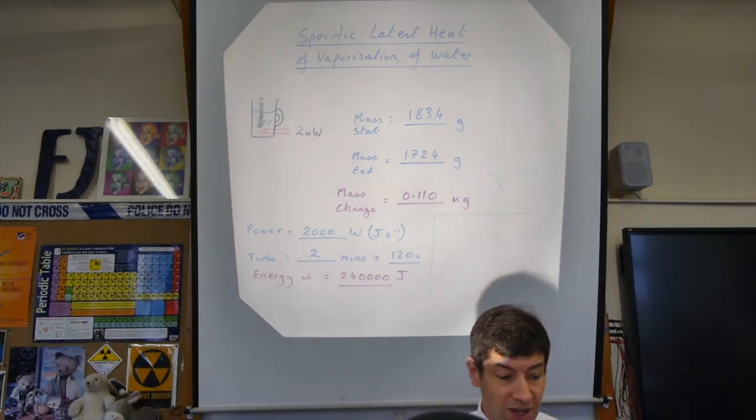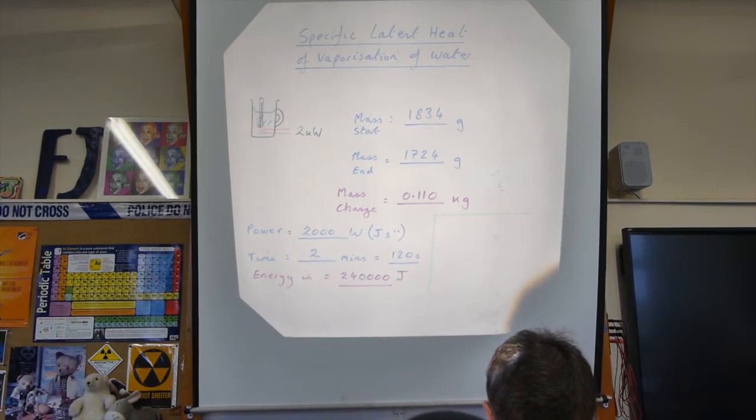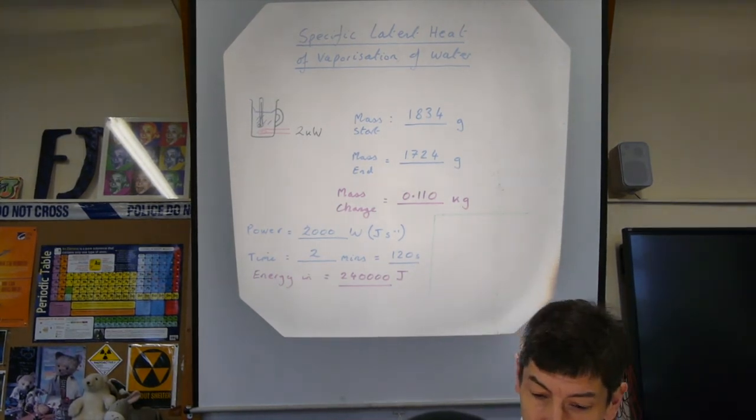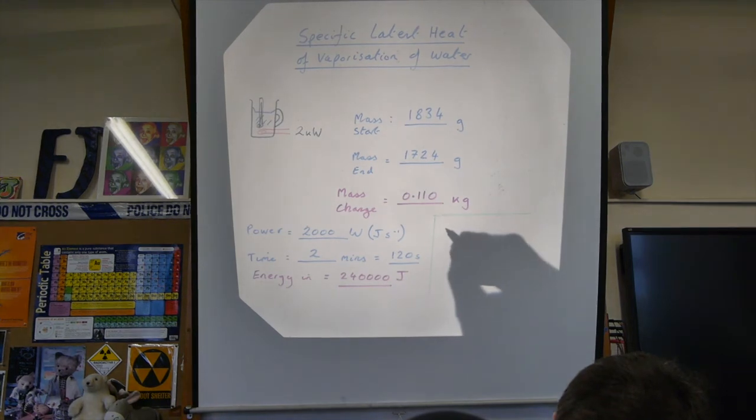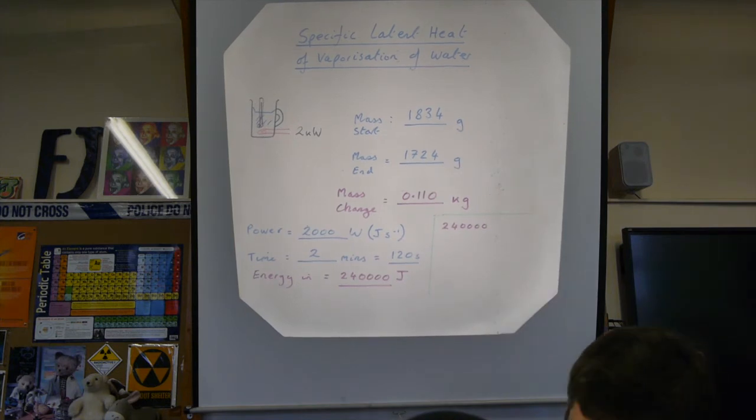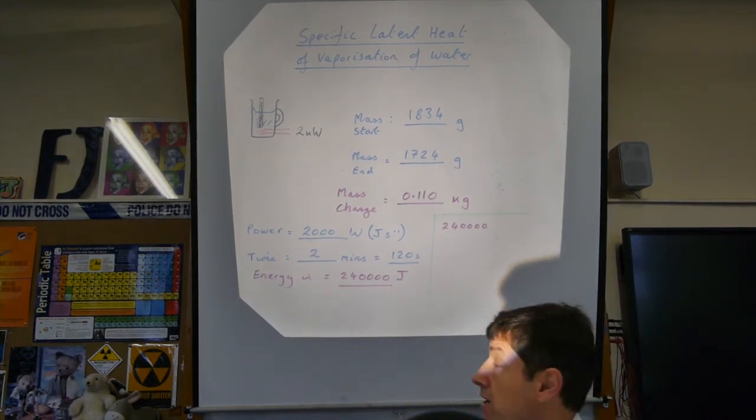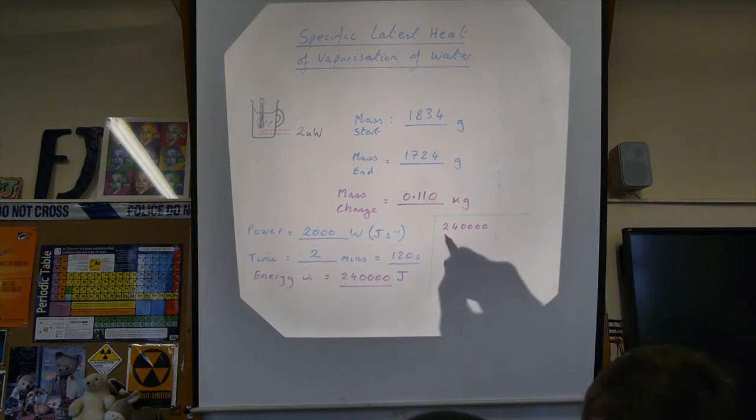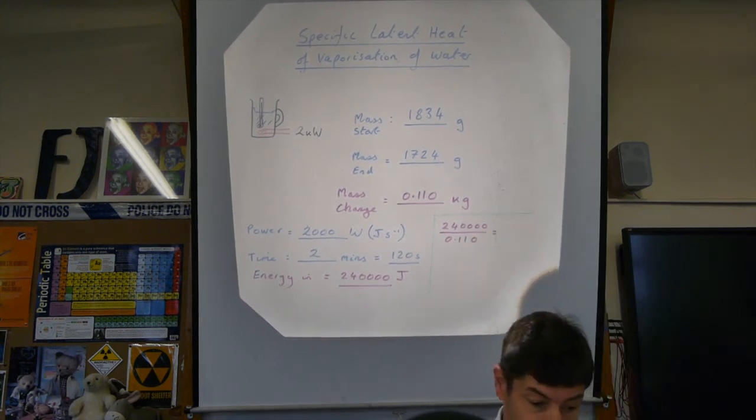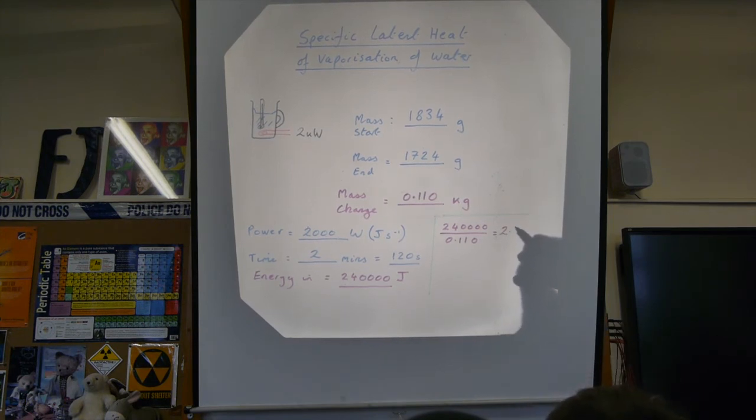So let's work out what the specific latent heat of vaporization of water is. We've needed 24,000 joules for our 0.11 kilograms. So let's divide that by 0.110, and we get 2.18 megajoules per kilogram.